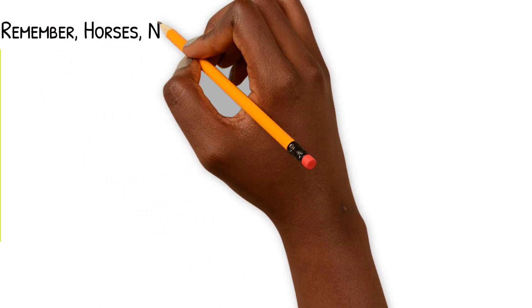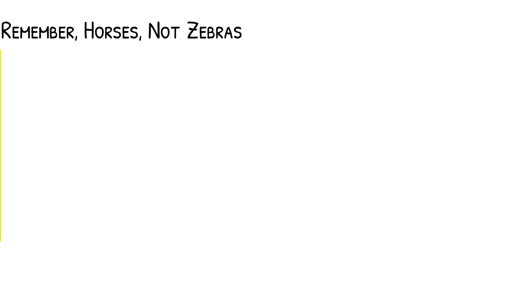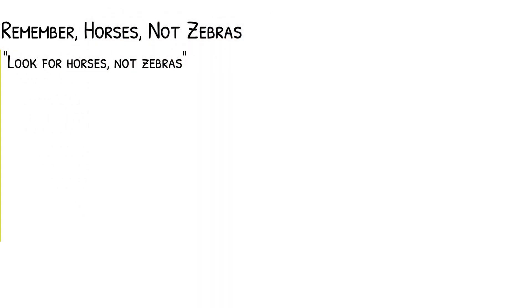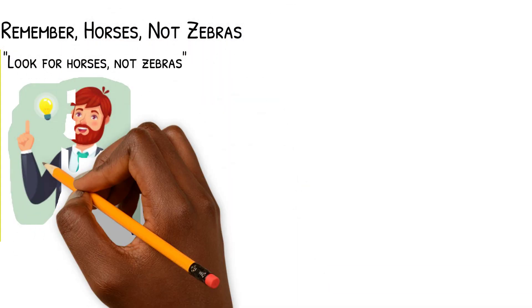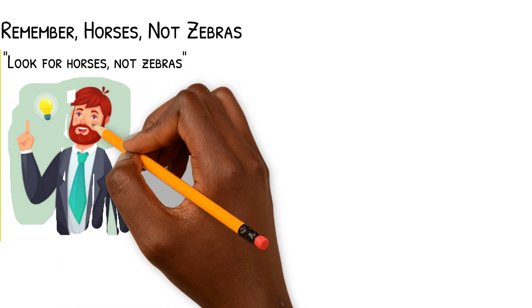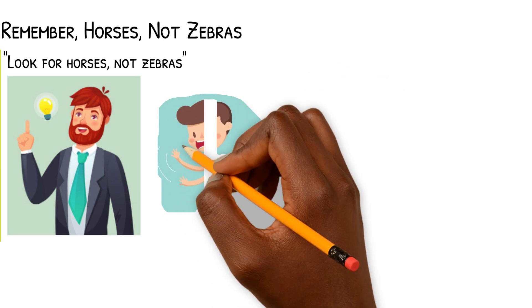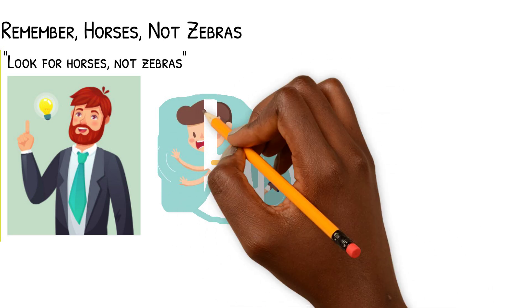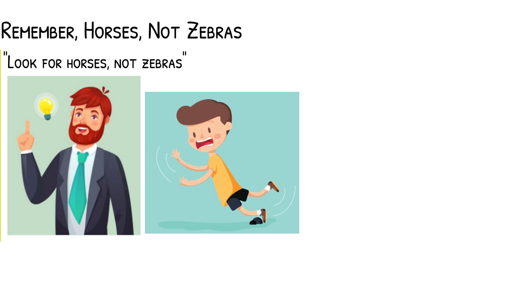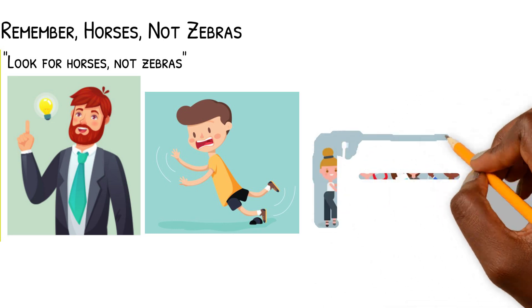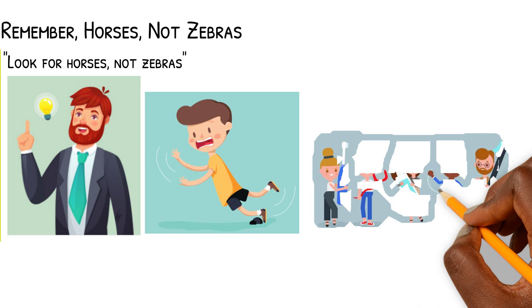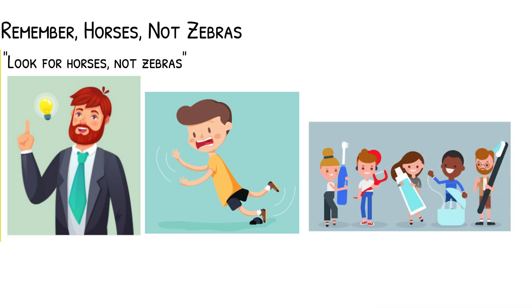Remember: horses, not zebras. There's this saying used in law enforcement, medicine, and screenwriting — look for horses, not zebras. It means that in most cases, the answer is the most simple or obvious, not the rarest situation. A person who trips and falls most likely has a sprain, not a broken hip. This should be the same in your marketing script. While it might be more interesting to present an innovative situation or use for your product, it will be more effective to show its everyday use and why people buy it.